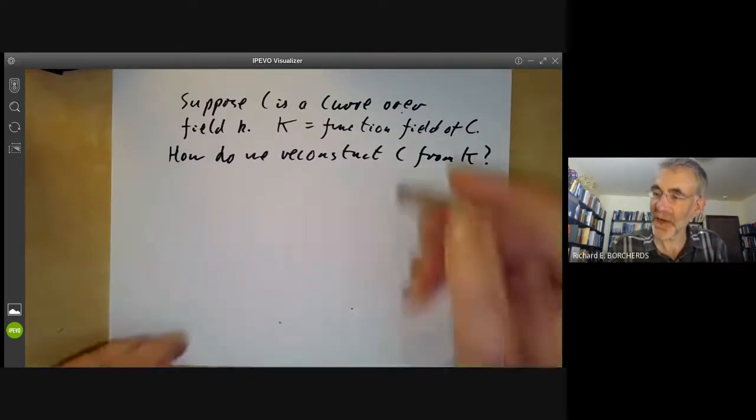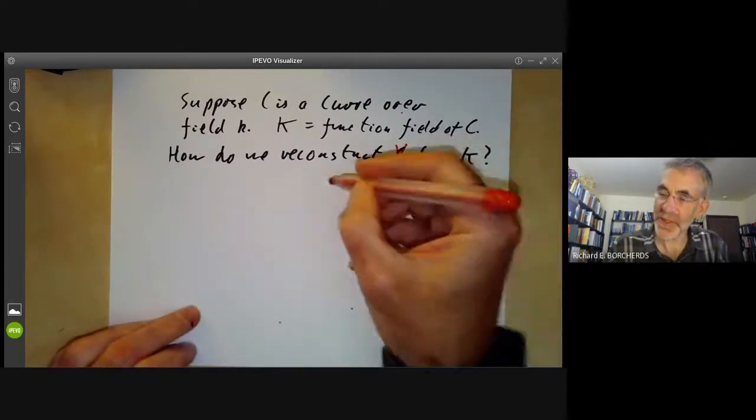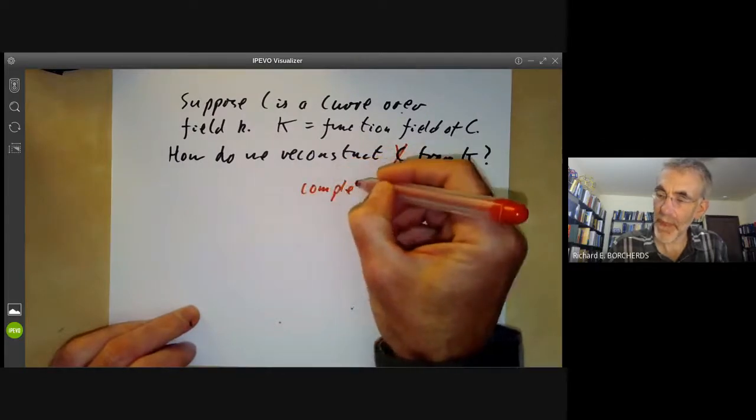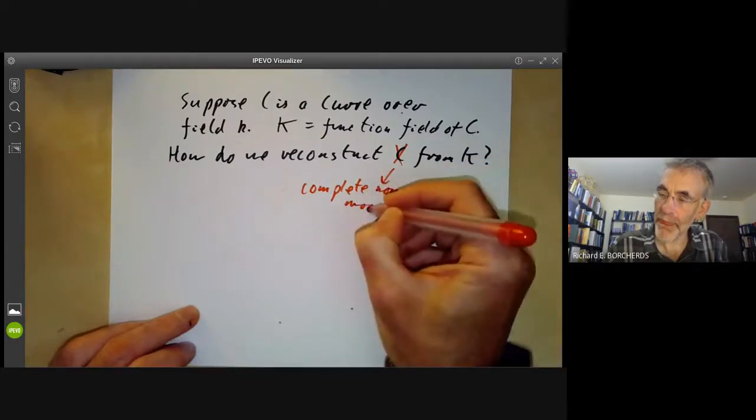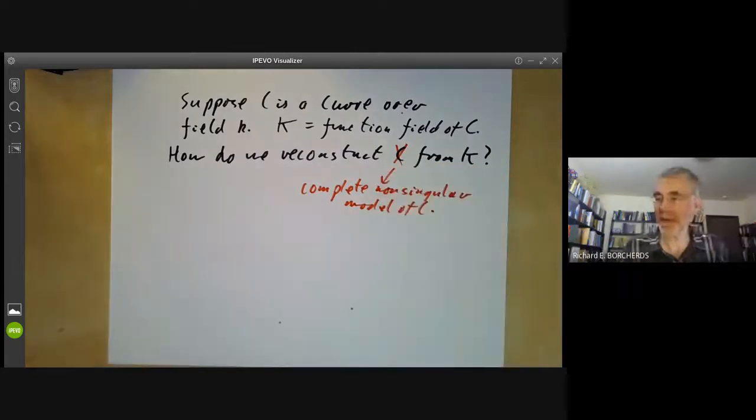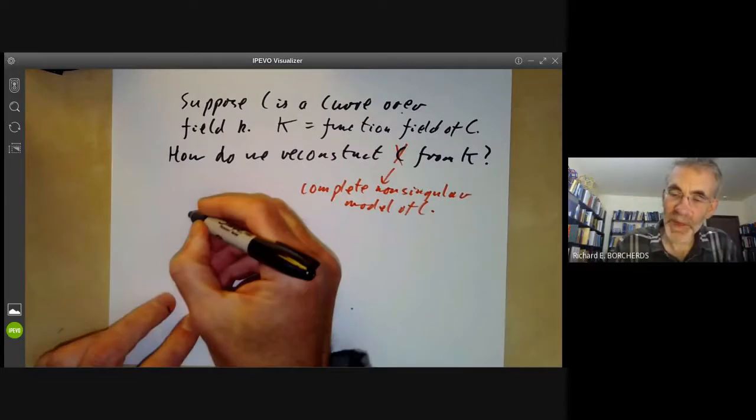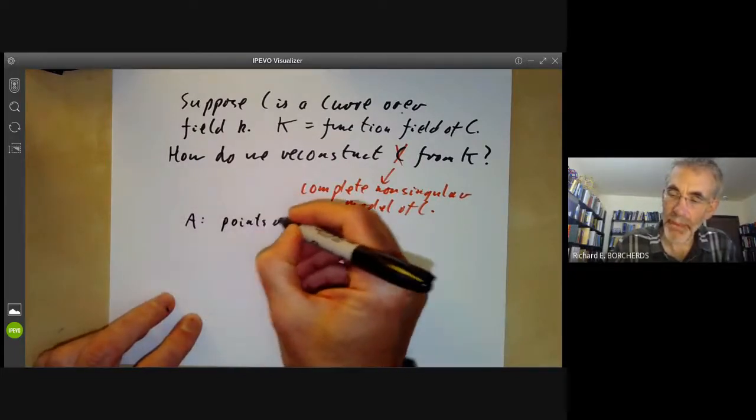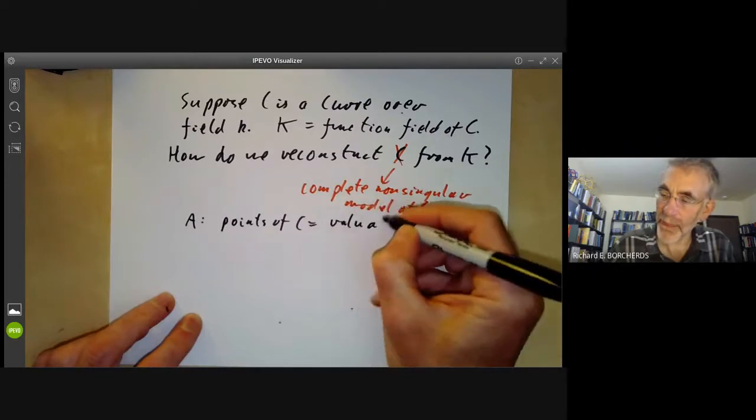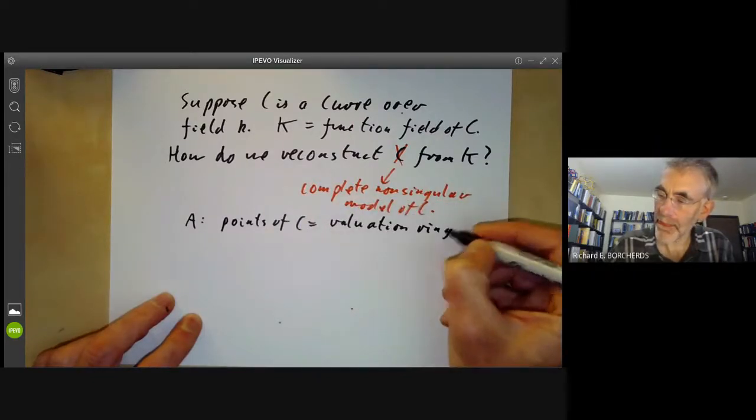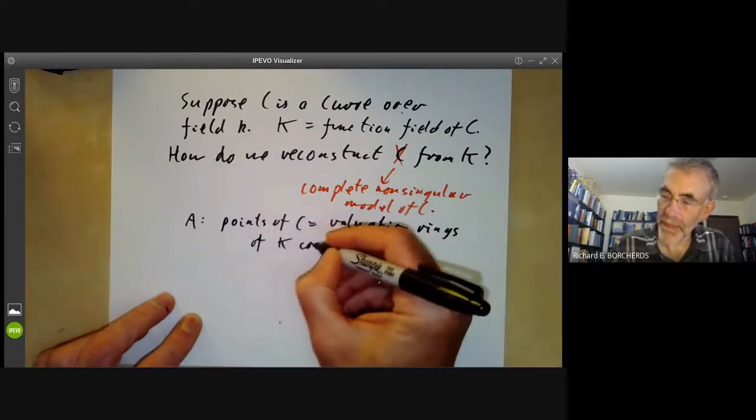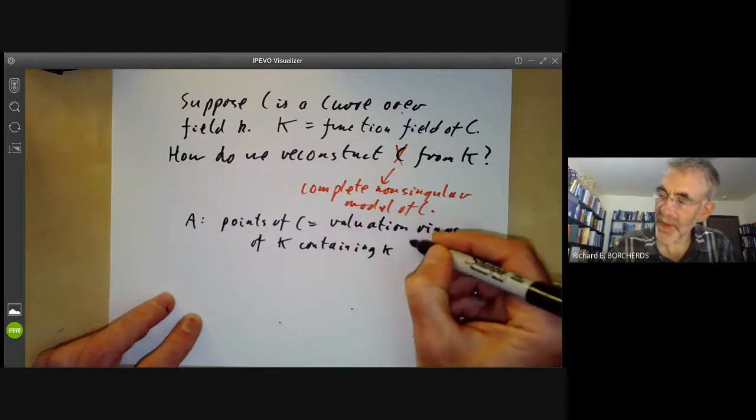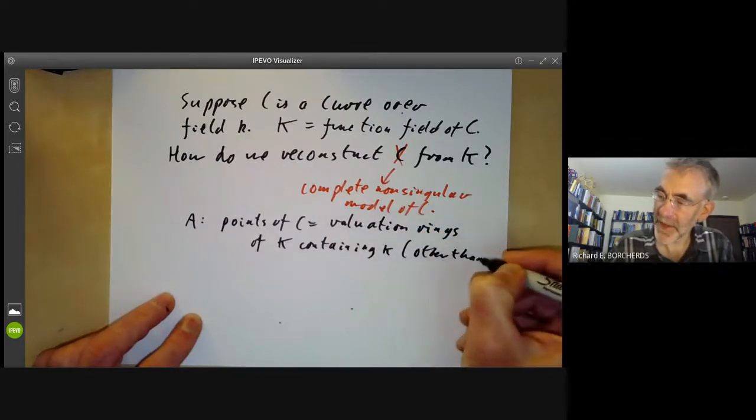So instead of reconstructing C, we should try and reconstruct, say, a complete non-singular model of C. Or we could start with C being complete and non-singular. And the answer is, we can take the points of C to be the valuation rings of K containing little k, other than big K itself.